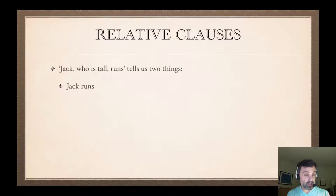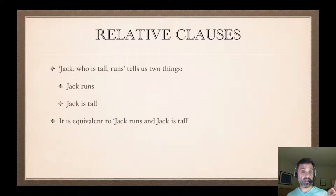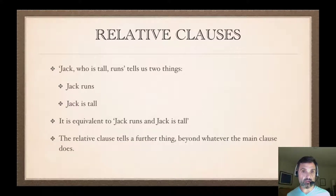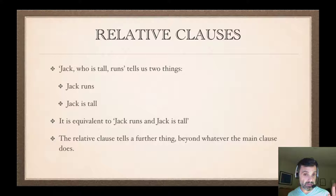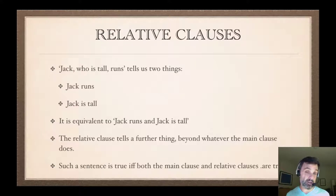How do we symbolize one of these? We can symbolize a sentence with a relative clause in it, but it's not obvious how, because there's no explicit logical vocabulary. Well, 'Jack, who is tall, runs' tells us two things: it tells us Jack runs, and also that Jack is tall. In other words, it's equivalent to 'Jack runs and Jack is tall.' So we can symbolize it as a conjunction. The relative clause tells us a further thing beyond whatever the main clause does — two pieces of information. Such a sentence is true if and only if both the main and relative clauses are true, so it's a conjunction.